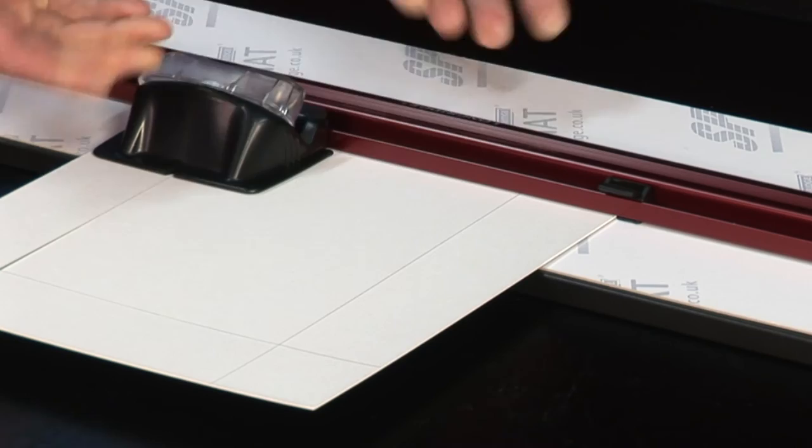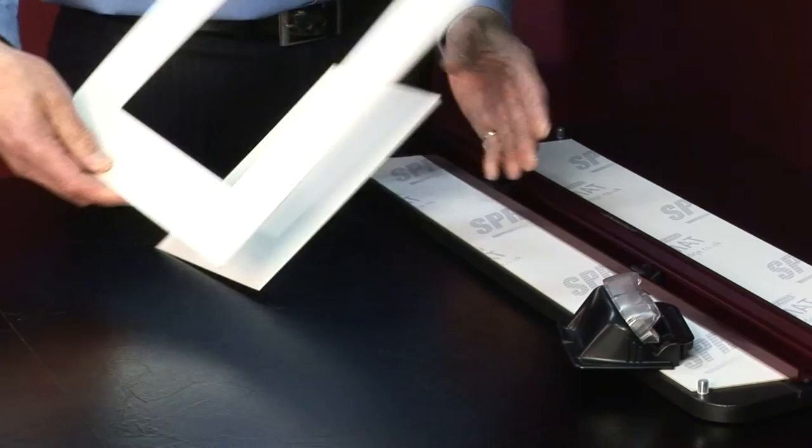We don't need to move the stops. They're in the right place, of course. Drop the blade in, push the cutter away to the far end and out drops the mount. There we are.